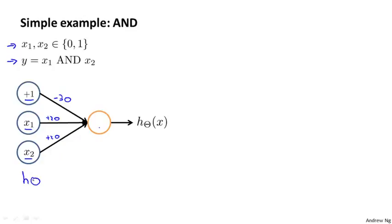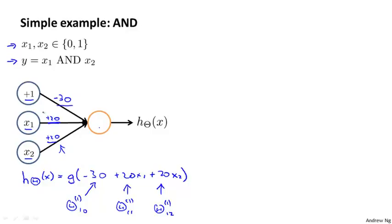So concretely, this is saying that my hypothesis h of x is equal to g of minus 30 plus 20 x1 plus 20 x2. So sometimes it's just convenient to draw these weights, draw these parameters up here in the diagram of the neural network. And of course, this minus 30, this is actually theta 1 of 1,0. This is theta 1 of 1,1. And that's theta 1 of 1,2. But it's just easier to think about it as associating these parameters with the edges of the network.